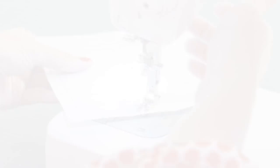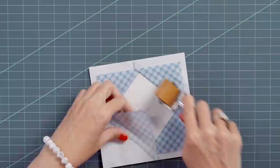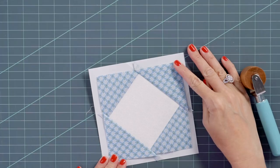Now that we have these sewn, we're going to press this with our seam roller. When we cut this down, you're going to end up with two flying geese.